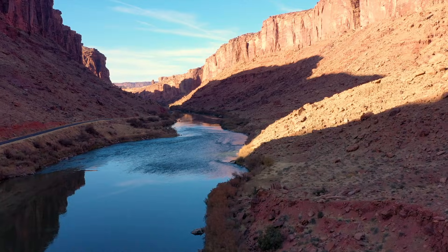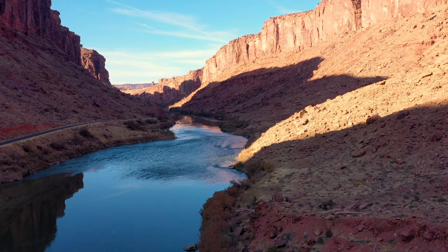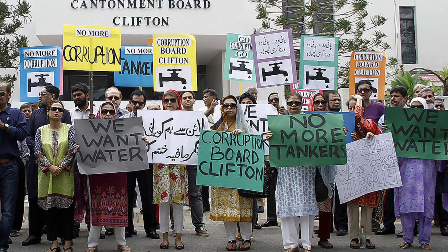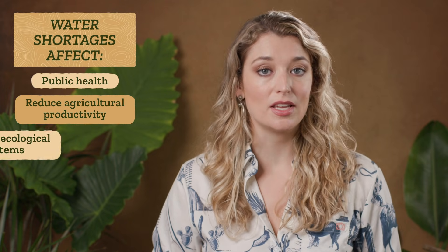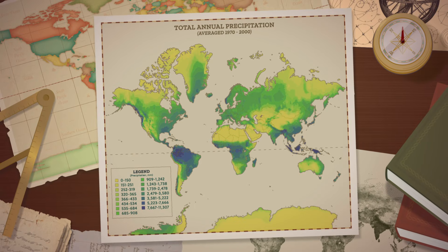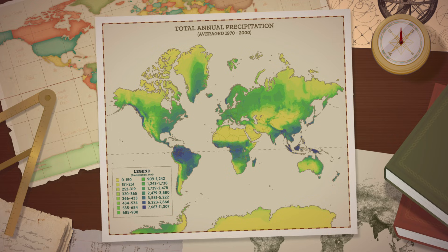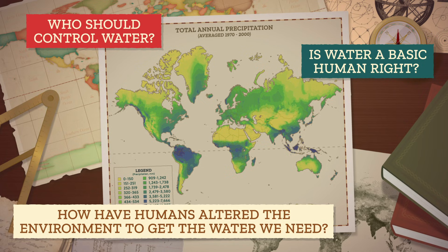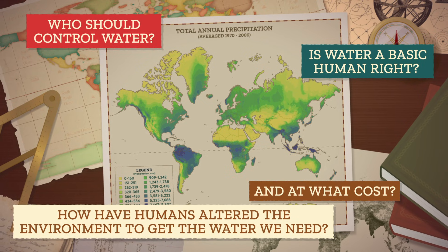There is no substitute for water. Today, we mainly focused on one region with one kind of precipitation pattern, but we still saw how studying precipitation opens up lots of deeper questions about geography — from what makes a region habitable to political struggles over resources. Some of the most serious geopolitical issues in the Middle East, North Africa, South Asia, and the Western US relate to control over water. Like water shortages affect public health, reduce agricultural productivity, and damage ecological systems on which we depend. So really, that map of Earth's precipitation is the foundation of big geographical questions: Who should control water? Is water a basic human right? How have humans altered the environment to get the water we need, and at what cost?